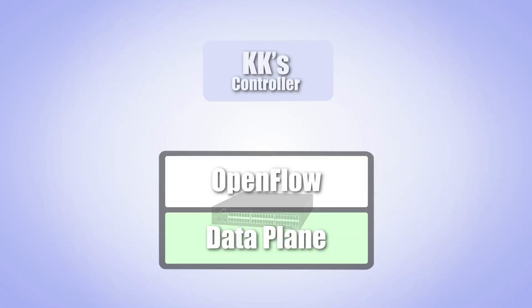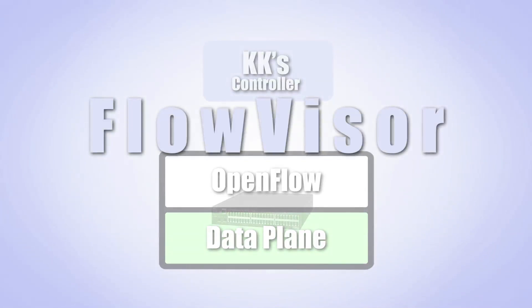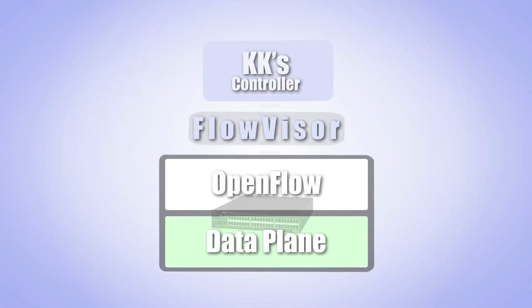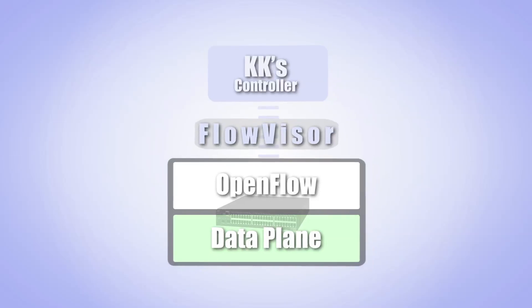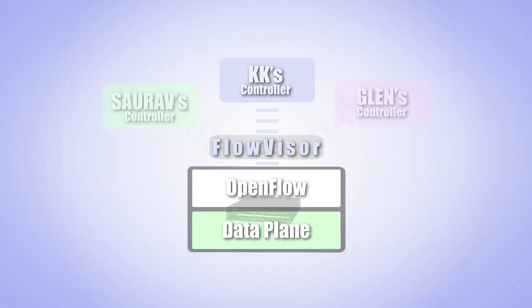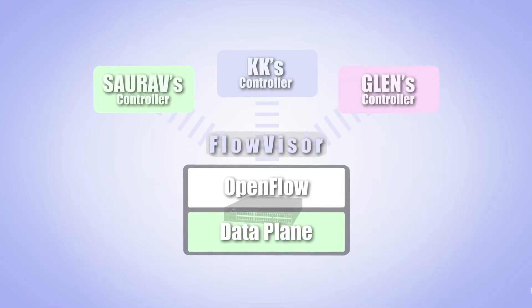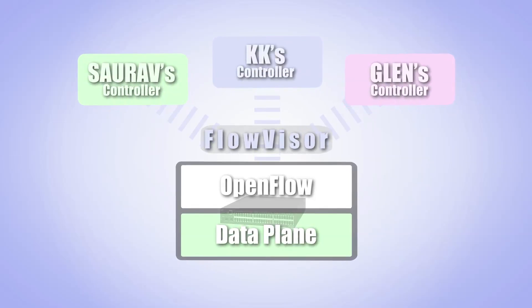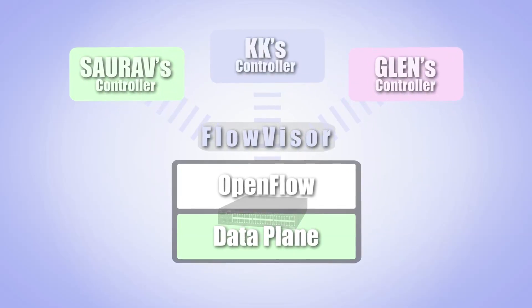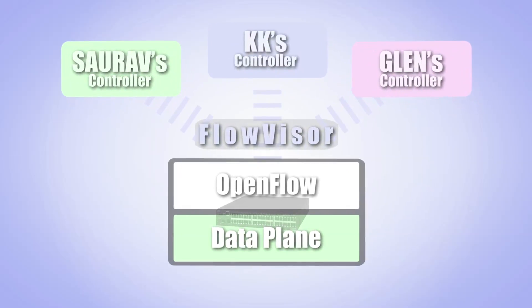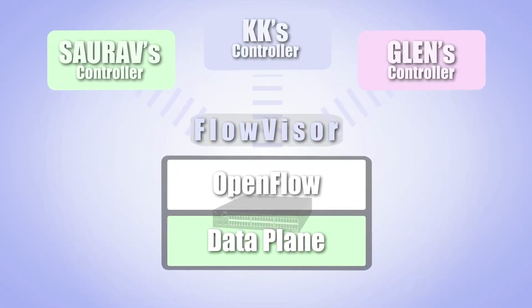In this video, we show how our tool FlowVisor can logically slice an OpenFlow network and allow multiple controllers to concurrently manage different subsets or slices of network resources. Critically, FlowVisor ensures strong isolation between network slices, so that actions in one slice do not affect another.